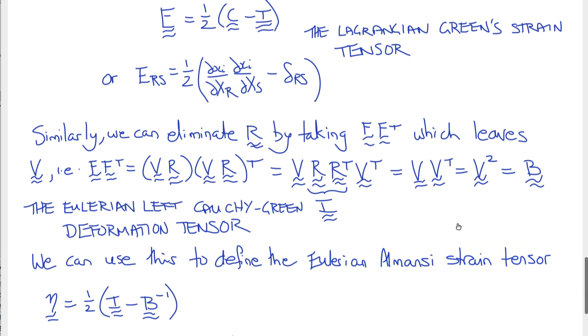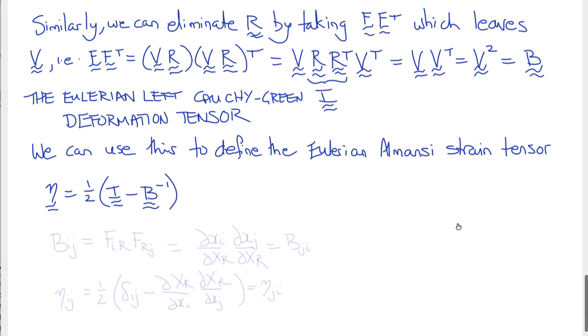If we look at the components of B, Bij equals FiR FRj, which is FF transpose. Notice this time it's the components that refer to the undeformed reference coordinates that are summing, leaving us ∂xi/∂Xr ∂xj/∂Xr. This expression is also symmetric in i and j, so Bij equals Bji, and this time the indices refer to the current or deformed coordinates.